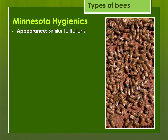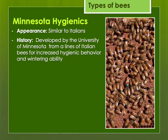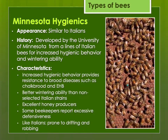The Minnesota Hygienic bees were selected from strains of Italians — developed by the University of Minnesota from lines of Italian bees, with the Starline hybrid from the seventies and eighties as some of the foundation stock. They were selected for increased hygienic behavior and wintering ability. This hygienic behavior provides resistance to brood diseases such as chalkbrood and European foulbrood. They have better wintering ability compared to non-selected Italian strains because they were selected in Minnesota. They're excellent honey producers, though some beekeepers say they're a little more defensive than other strains, and similar to Italians they can drift and rob more than some other strains.